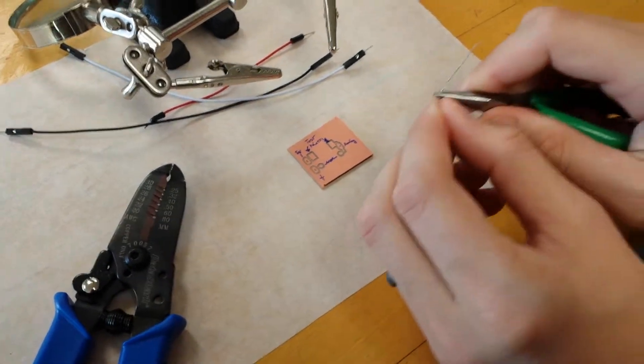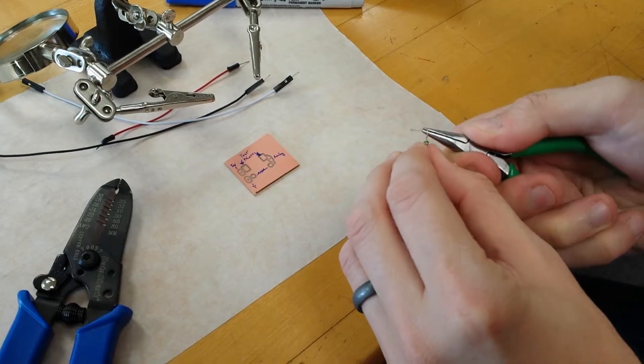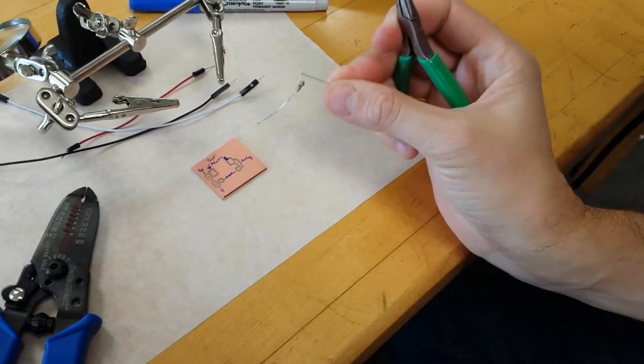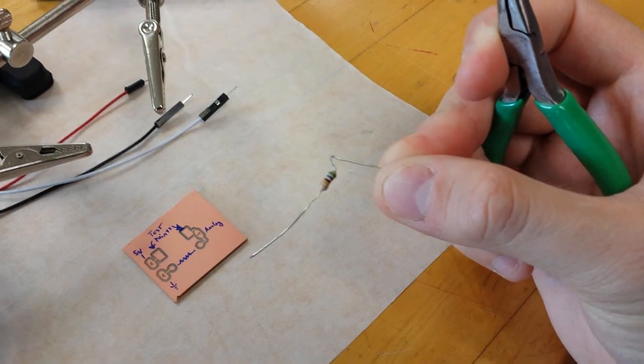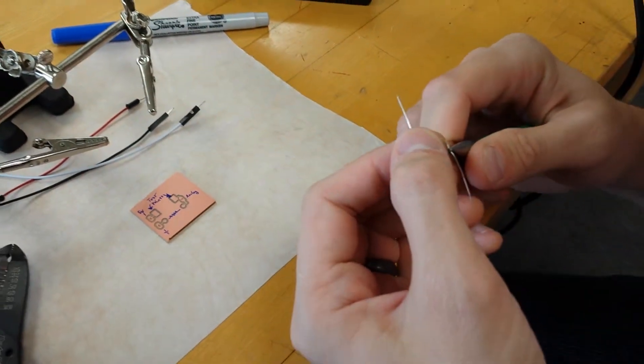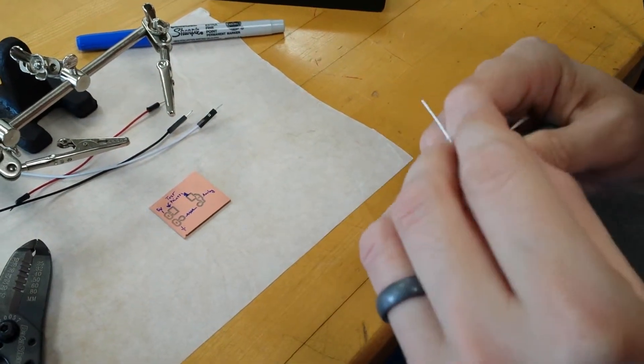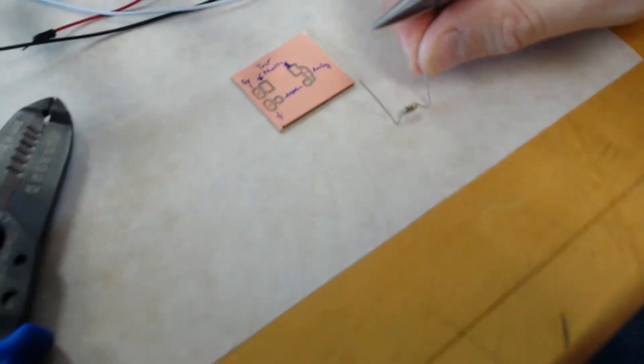So the way you do it is bend it up and then bend it backwards so that you have something like this. And then you'll do the same on the other side. Bend it out, bend it backwards up. And so you have these two little touch points.